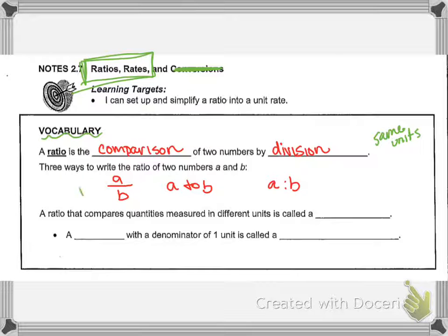So those are three different ways that you can show a ratio. Now a ratio that has different units, so maybe money over items, or you could do miles over hour, things like that, those are called rates.